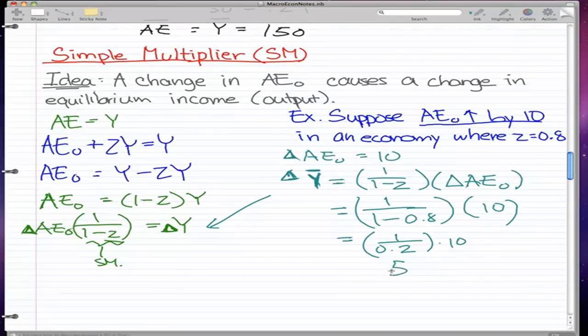That is essentially equal to 1 over 0.2 times 10, which equals 5 times 10, which equals 50. So the change in Y is equal to 50. You can see now where we get our formula.